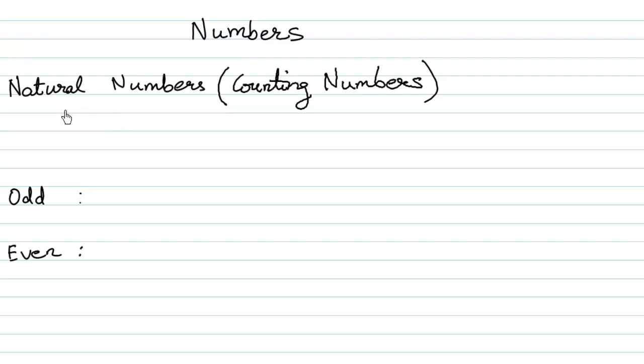So let us start with what natural numbers are. Natural numbers are also called counting numbers. All those numbers that we use while counting, for instance 1, 2, 3, 4, 5, 6, 7, 8, 9, 10, 11, 12, all these numbers are said to be natural numbers.